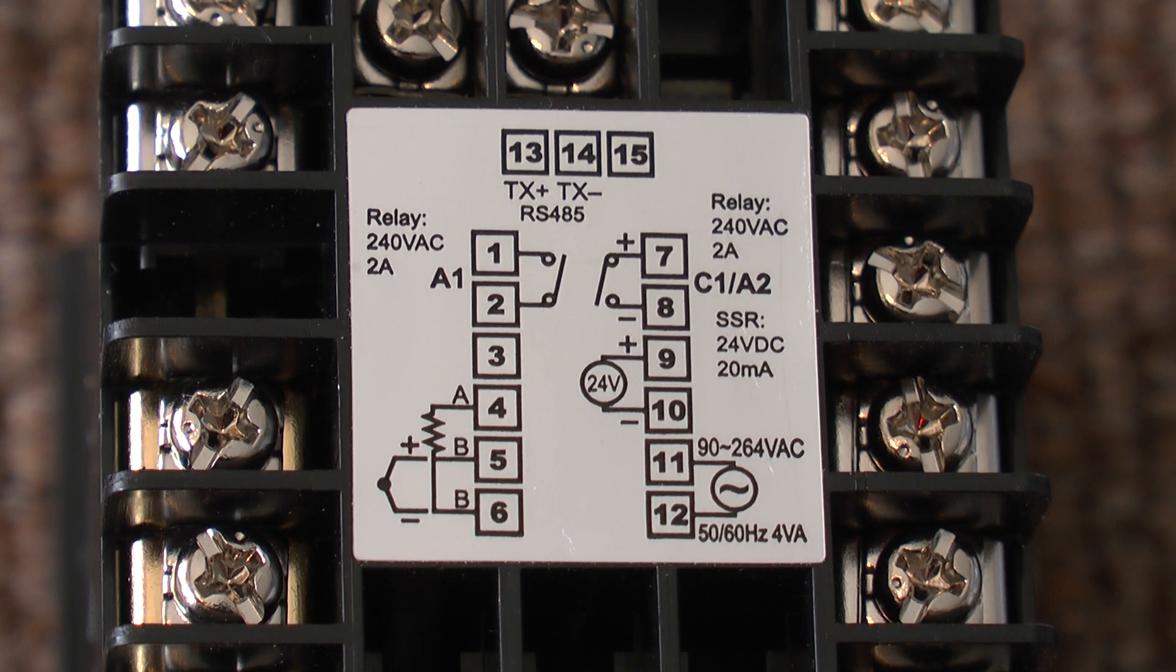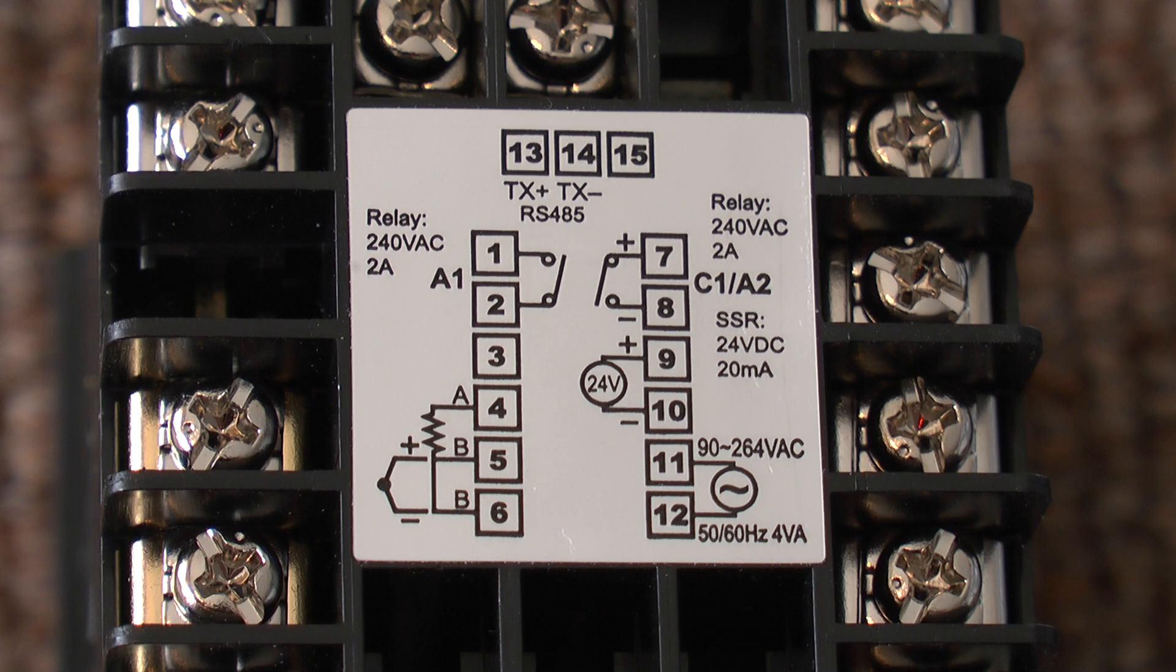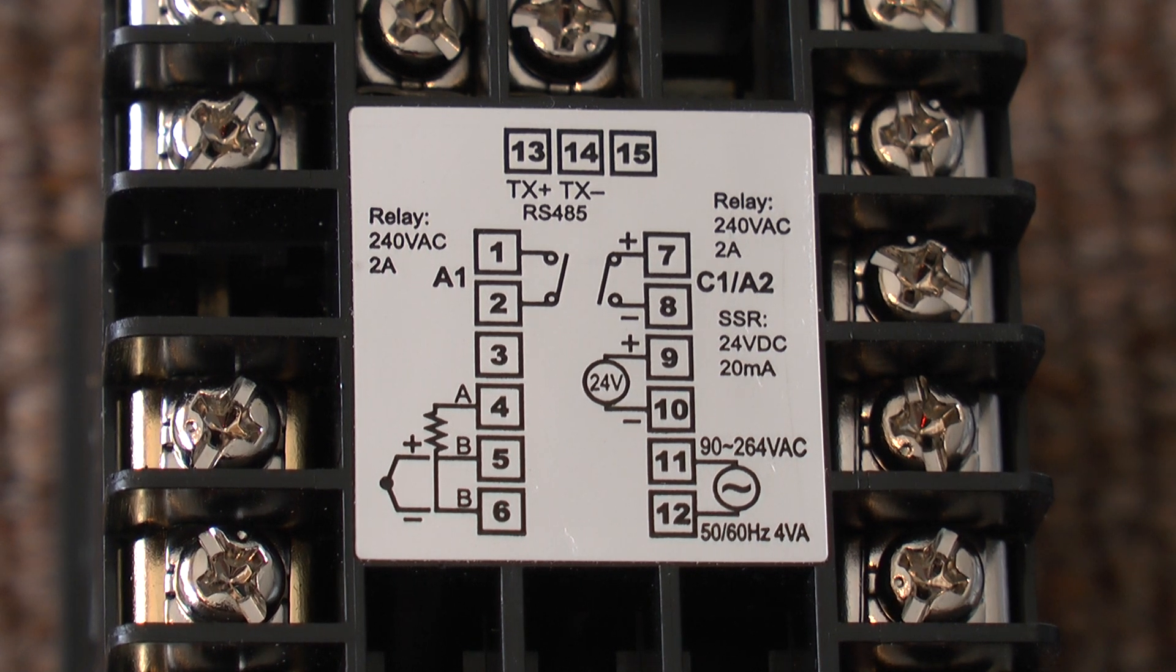Terminal 7 is the positive wire going to the solid state relay and terminal 8 is the negative. It will provide the 24 volts required to switch most solid state relays.